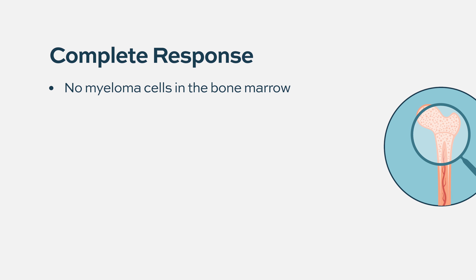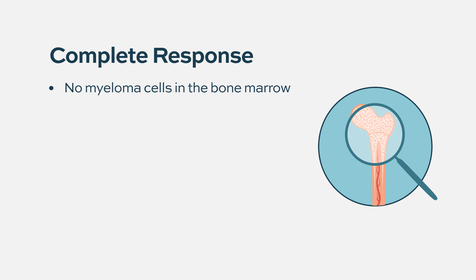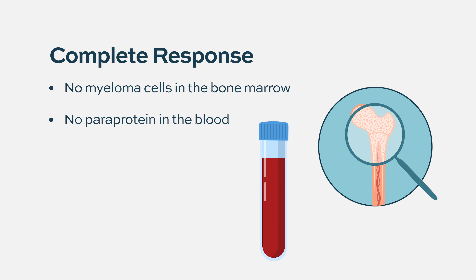Now that therapies are so much more effective, more patients are reaching complete response. That means if you look at the bone marrow you don't spot the plasma cells, and if you do the blood test you don't find the paraprotein. So in those patients, until very recently, their disease was completely under the radar — we knew it was there because most if not all were going to see the disease come back, but we just could not identify it.